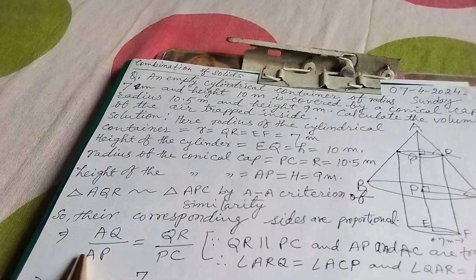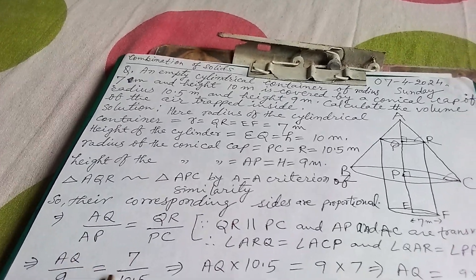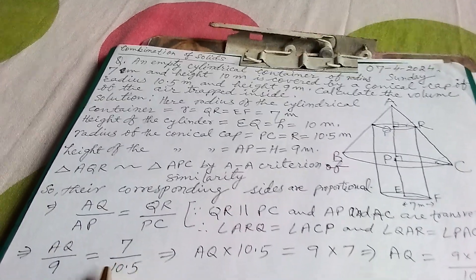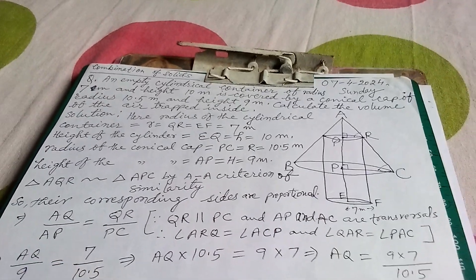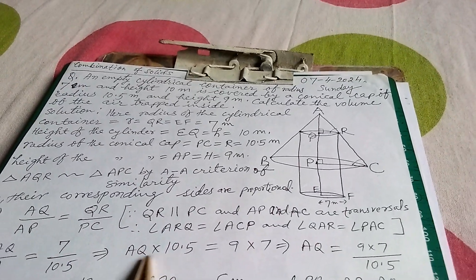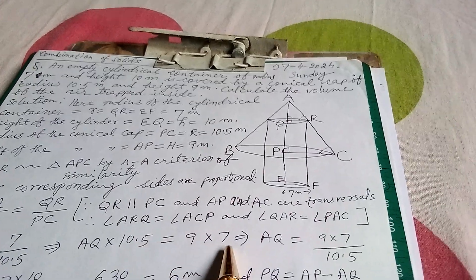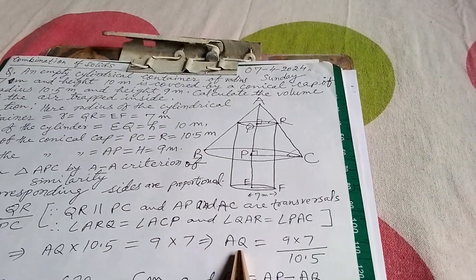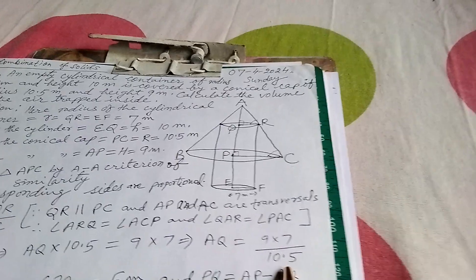This implies AQ by AP equals QR by PC. So AQ by 9 equals 7 by 10.5. By cross multiplication we get AQ times 10.5 equals 9 times 7. This implies AQ equals 9 times 7 by 10.5.